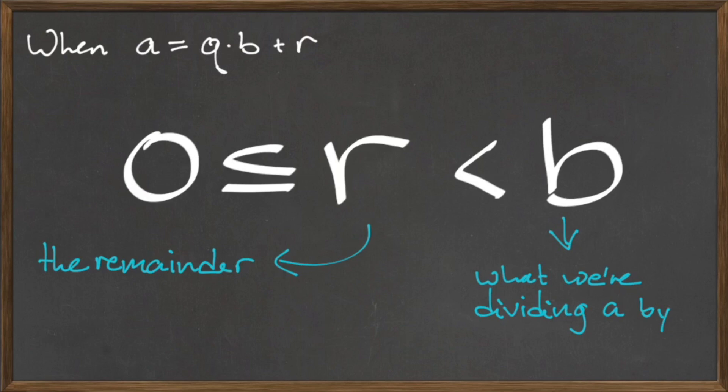Formally, we can write the compound statement 0 is less than or equal to r is less than b. The values for the remainder r must always fall within this range. So when computing division by hand, if you get a remainder that is outside of this range, go back and check your work carefully.